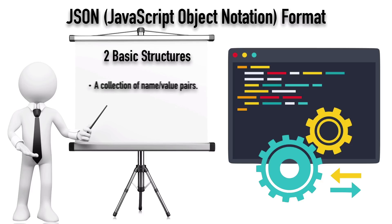There's one structure that's a collection of name-value pairs. That sounds a lot like a Python dictionary, doesn't it? We've got a name, a colon, and then a value. The second structure is an ordered list of values, which sounds a lot like a Python list.